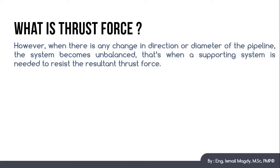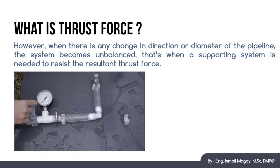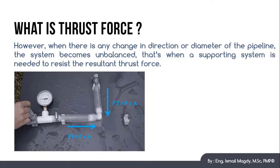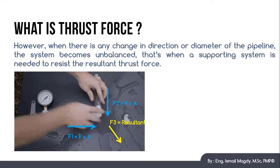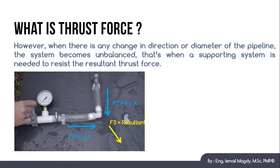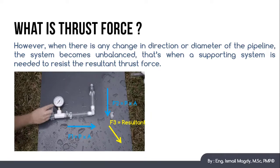On the other hand, let's check what's gonna happen if we added a bend to the system. As we can see here in this video, now F1 and F2 are not cancelling each other anymore. They have a resultant force, which is F3, in the outer direction. That's why we can see that the bend is getting detached from the system once we start pressurizing it.